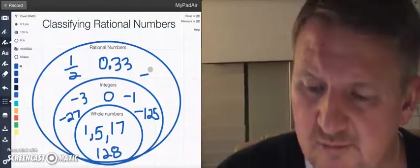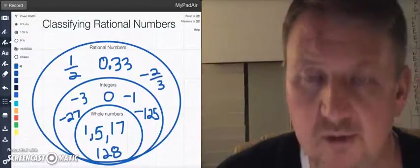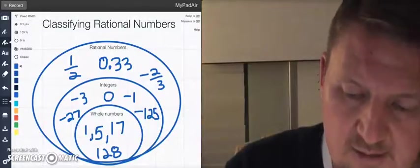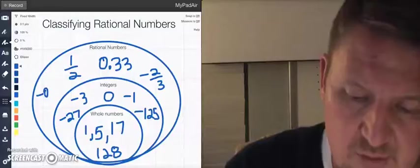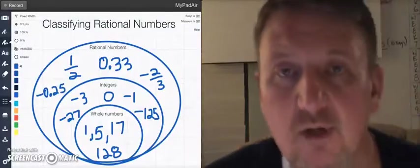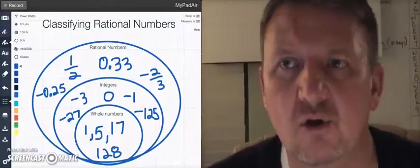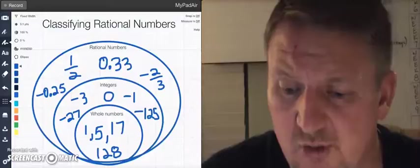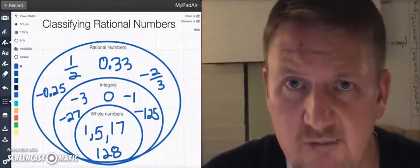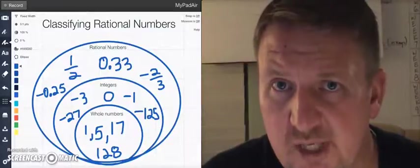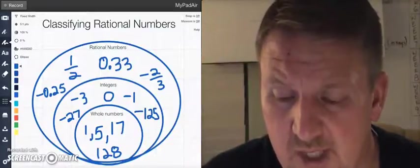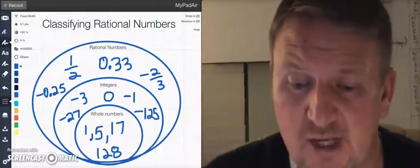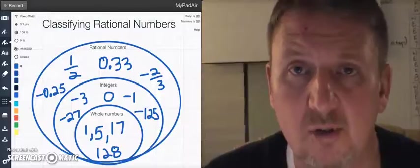It also includes negative two thirds, so fractions to the left of zero on the number line. And it also includes numbers like negative 0.25. So all these are different types of rational numbers. But don't get me wrong, rational numbers also include your integers, which include your positive and your negative numbers, and it also includes whole numbers. Because all of these can be expressed as a rational number. And when I say a rational number, I'm talking about a decimal or a fraction.